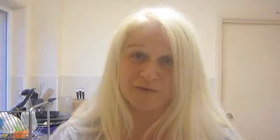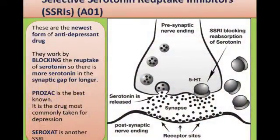By blocking the reuptake, SSRIs create more serotonin in the synaptic gap, so the receptors can take in more of it. More serotonin goes where it's meant to go, and that alleviates the symptoms of depression in many people — not all, but many. Some well-known SSRIs include Prozac, Seroxat, Sertraline, and Citalopram.